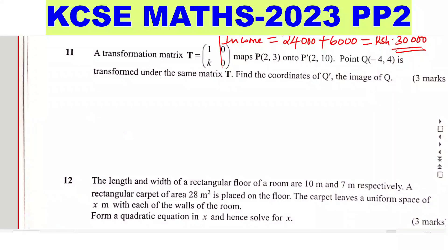Question 11. A transformation matrix T is given by 1K00 maps P(2,3) onto P'(2,10). Point Q, negative 4, 4, is transformed under the same matrix T. Find the coordinates of Q', the image of Q.